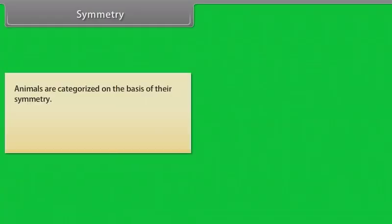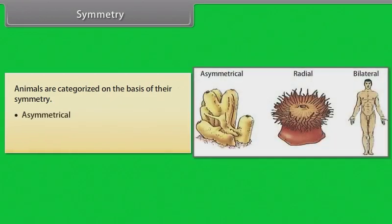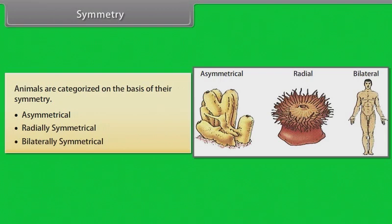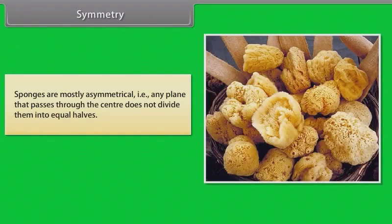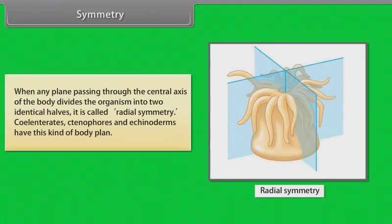Symmetry: Animals are categorized on the basis of their symmetry — asymmetrical, radially symmetrical, or bilaterally symmetrical. Sponges are mostly asymmetrical; any plane passing through the center does not divide them into equal halves. When any plane passing through the central axis divides the organism into two identical halves, it is called radial symmetry.